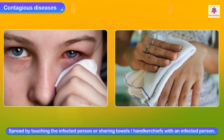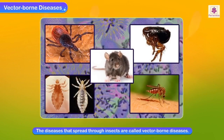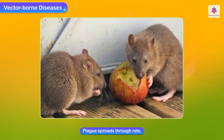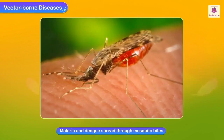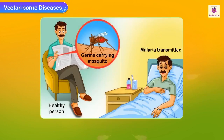Vector-borne diseases: the diseases that spread through insects are called vector-borne diseases. Lice transmit typhus fever; plague spreads through rats. Malaria and dengue spread through mosquito bites. When a female Anopheles mosquito bites a person suffering from malaria, the germs enter the body of the mosquito. The mosquito doesn't get infected, but when it bites a healthy person, that person gets malaria.